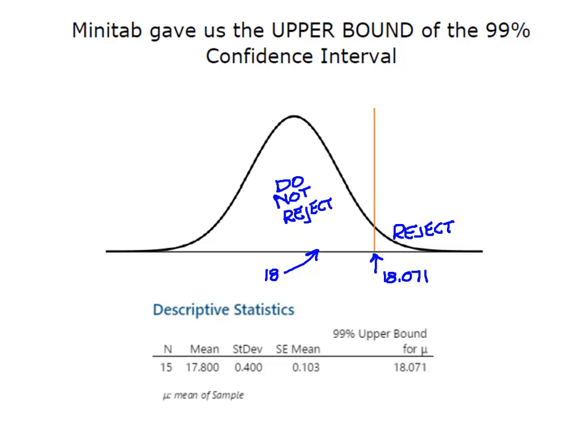And what we'll find is that the 18 falls inside of the interval because this interval runs this direction. I would have had to be up here greater than 18.071 to come up with a reject decision.